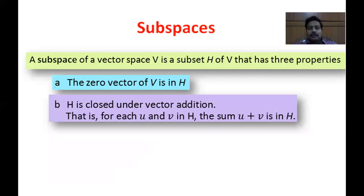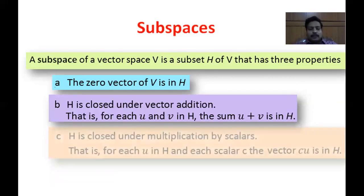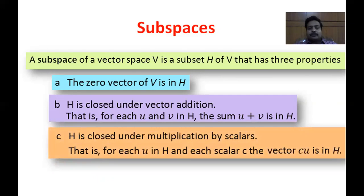For a subspace H of a vector space, it is enough to prove three conditions: H contains the zero vector, H is closed under vector addition, and H is closed under scalar multiplication. These are the concepts from our previous classes that are useful today.